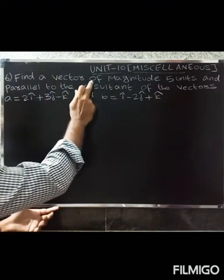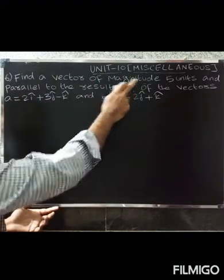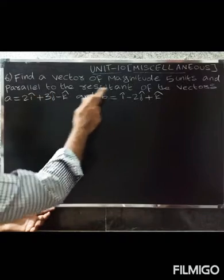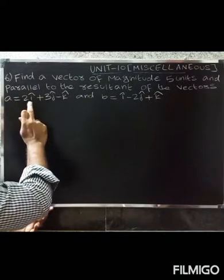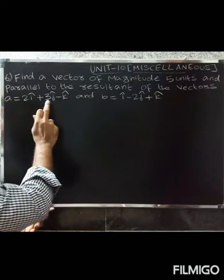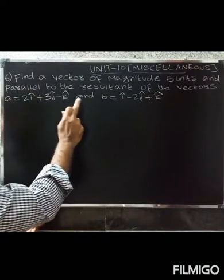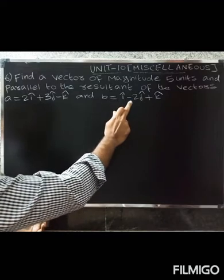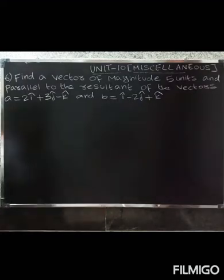Find a vector of magnitude 5 units and parallel to the resultant of the vector a equal to 2î + 3ĵ − k̂ and b equal to î − 2ĵ + k̂.